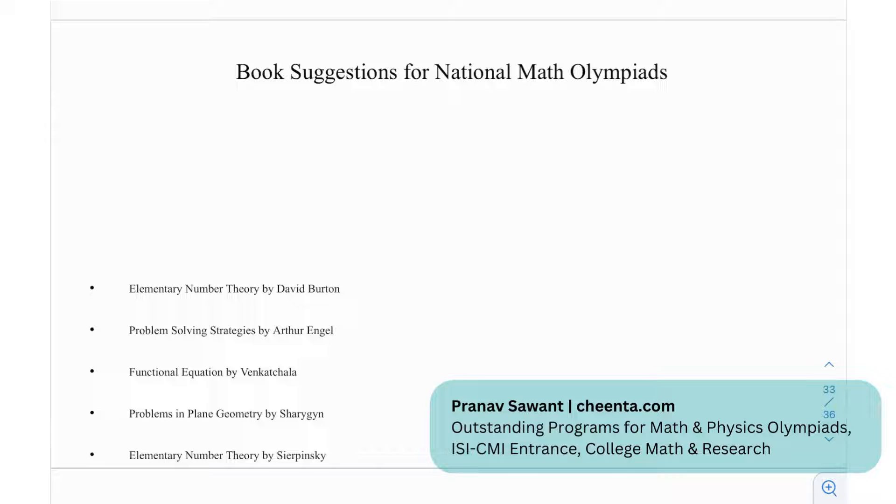Moving on, we have some book suggestions for national math olympiads: Elementary Number Theory by David Burton, Problem Solving Strategies by Arthur Engel, Functional Equations by Venkatachala, Problems in Plane Geometry by Sharygin, and Elementary Number Theory by Sierpinski.